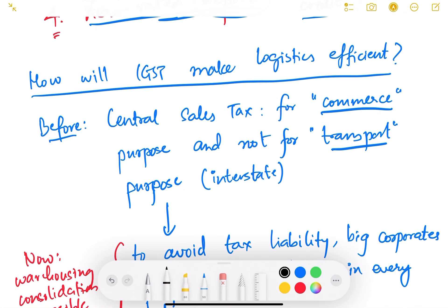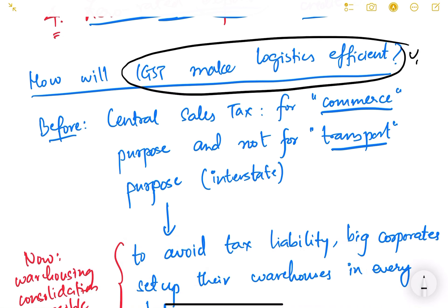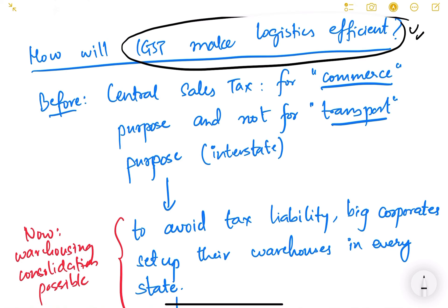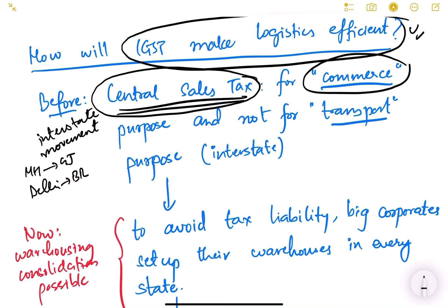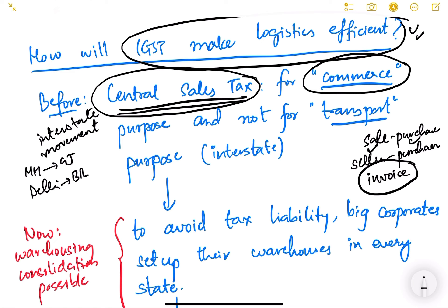Before the GST system, there was a Central Sales Tax on the interstate movement of goods. Whenever there was an interstate sale — for example from Maharashtra to Gujarat or from Delhi to Bihar — a Central Sales Tax was levied for commerce purposes, meaning sale and purchase. This tax would be levied only when goods were moving from one state to another for commerce purposes, not for transport purposes.